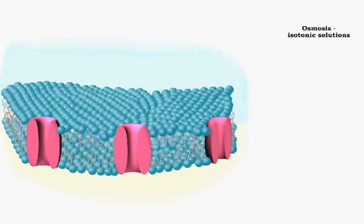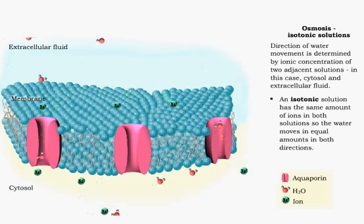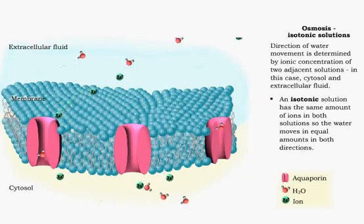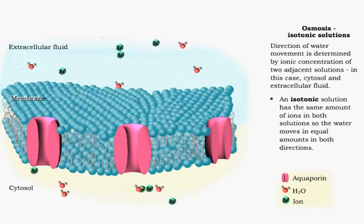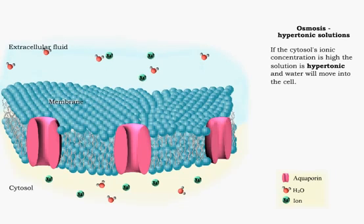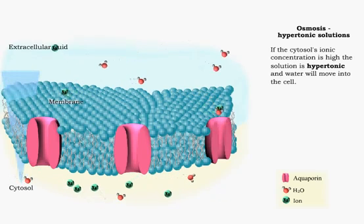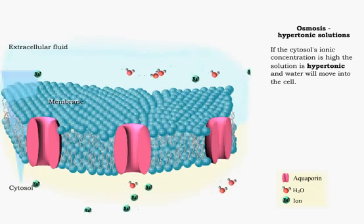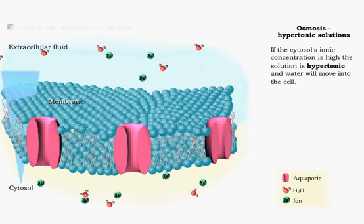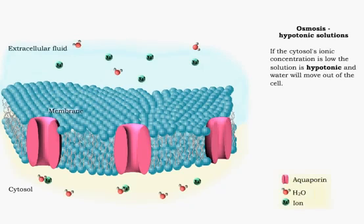The direction of osmosis depends on the relative concentrations of solutes in the cytosol and extracellular fluid. If the ion concentration is the same in both solutions, then water moves in equal amounts in both directions. A hypertonic solution has a low concentration of water, so the direction of osmosis would be toward this solution. A hypotonic solution has a high concentration of water, so the direction of osmosis will be away from this solution.